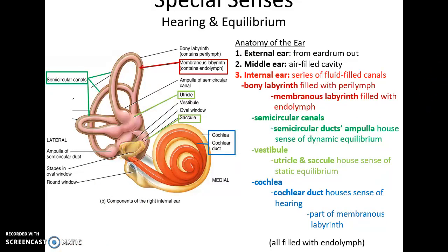That brings us finally to the internal ear. The internal ear is a bony structure — this weird-shaped bony structure called the bony labyrinth. Within the bony labyrinth is a fluid called the perilymph. Also within the bony labyrinth is a membrane structure that fills in the same areas, called the membranous labyrinth, which is also filled with fluid called the endolymph. Basically, we have a bony structure filled with fluid and a water balloon — the membranous labyrinth — also filled with fluid.